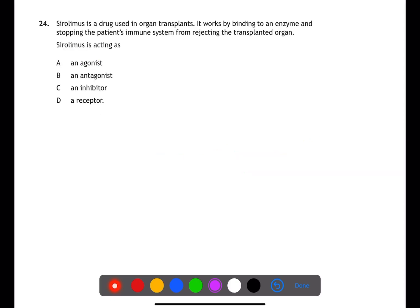For question 24, we're given information about a drug. This drug acts by stopping a patient's immune system. This means that this is inhibiting something in the body and therefore is an inhibitor, C.